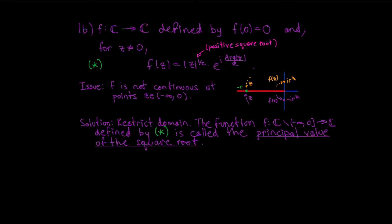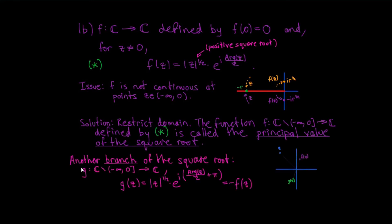One reason for throwing out 0 together with the negative real axis is that we want the domain to be an open set, which makes later statements easier. What we've defined is called a continuous branch of the square root function, but it's important to realize that in doing so we've made some choices. For another branch on the same domain, we could define g(z) = |z|^(1/2) · e^(i·Arg(z)/2 + iπ), which turns out to be the negative of f(z). There's also nothing special about the negative real axis — we could cut along a different line.